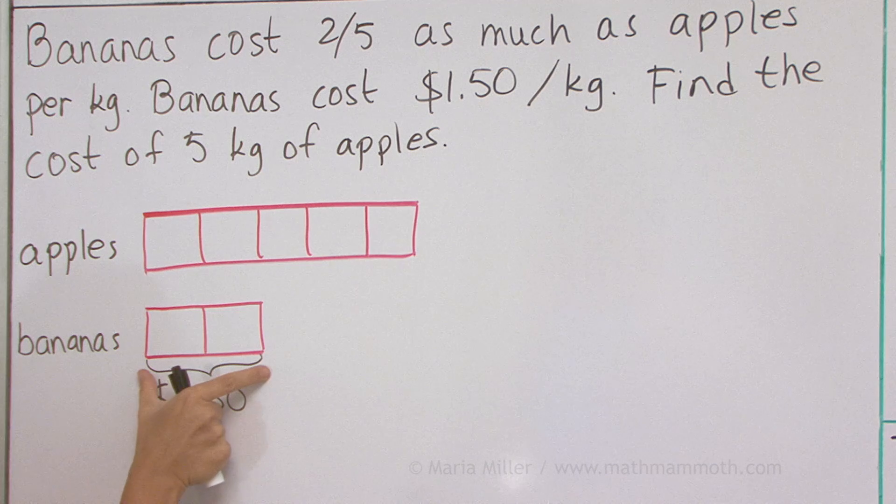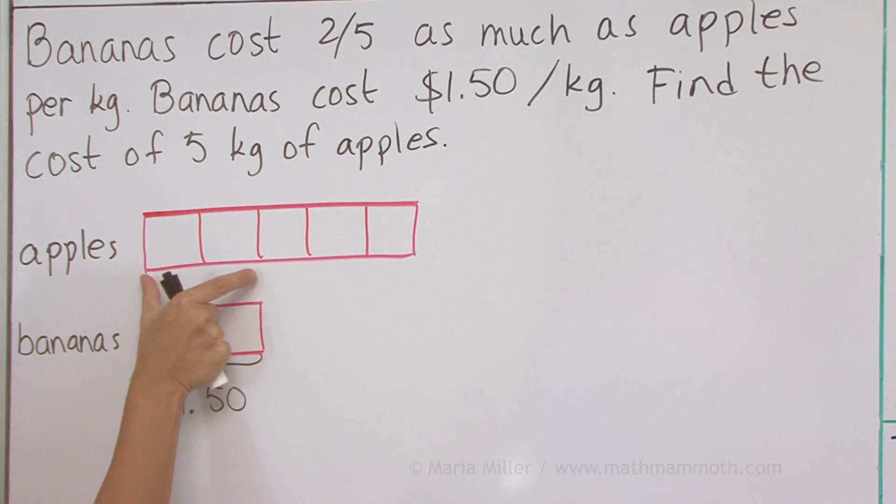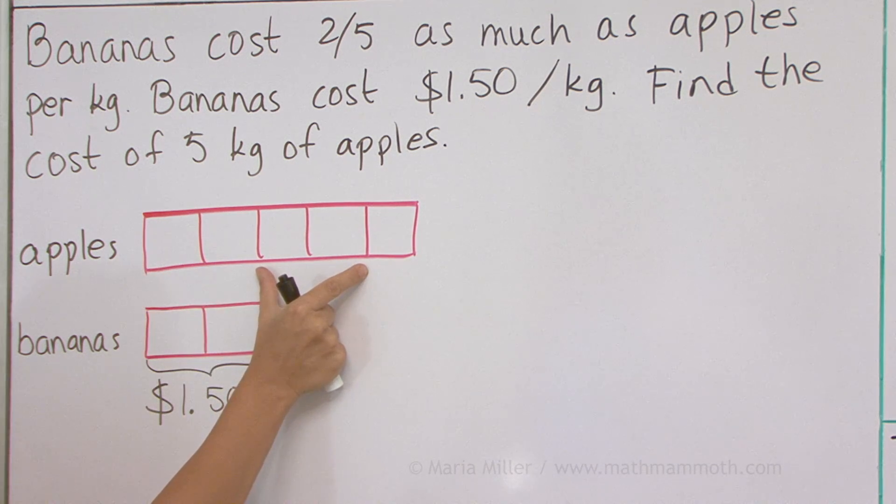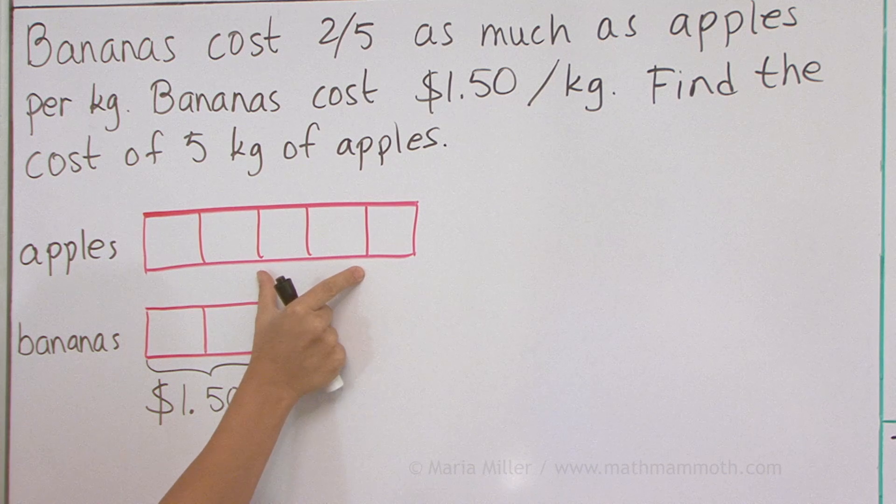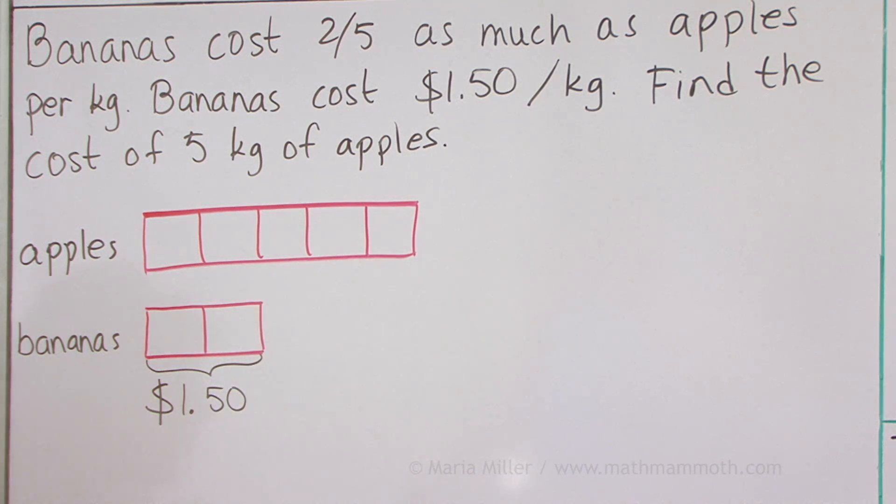If two blocks are $1.50, then they are here, too, $1.50. Another $1.50, and then one block. One block is $0.75, right? So $1.50, $1.50, $0.75 makes $3.75.